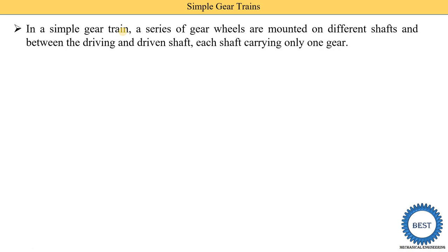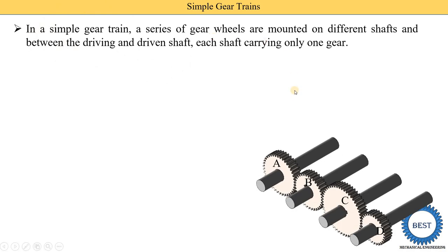The four types are: simple gear train, compound, reverted, and epicyclic. In a simple gear train, a series of gear wheels are mounted on different shafts, and between the driving and driven shaft, each shaft carries only one gear. Here in this diagram there are four gears — gear A, gear B, gear C, and gear D — each mounted on a separate shaft. This is called a simple gear train.